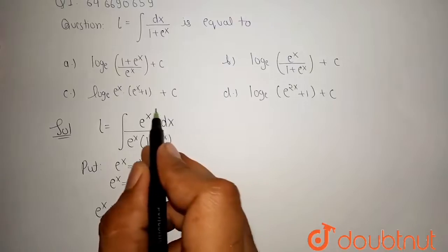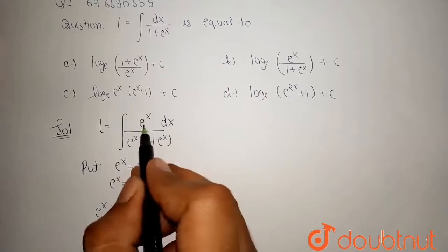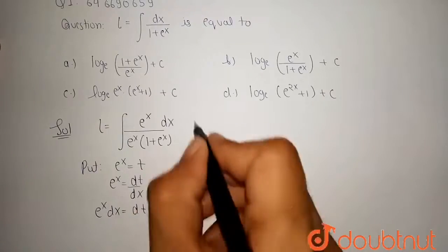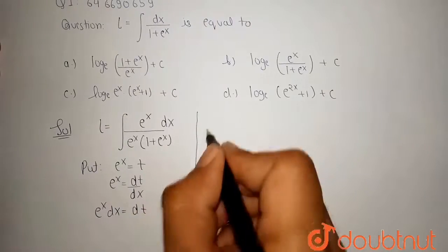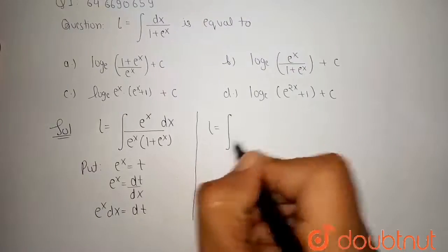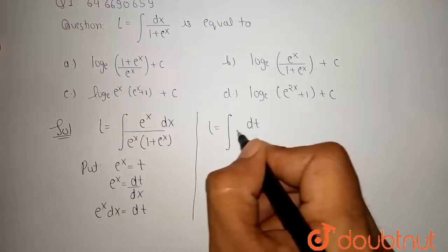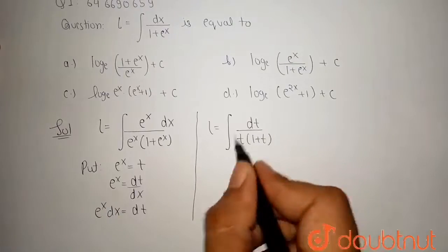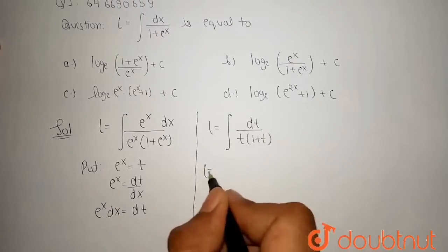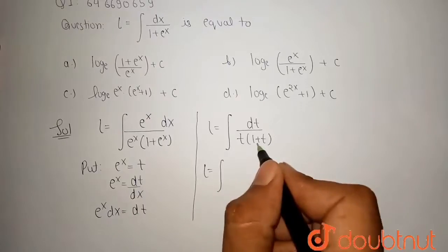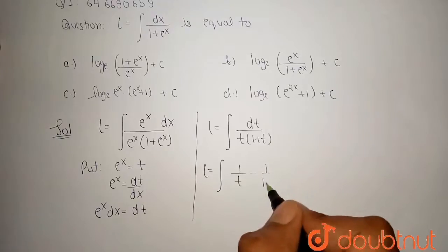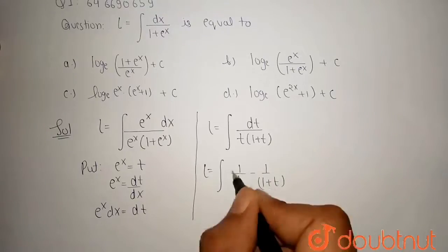I can replace this e to the power x into dx by this dt, and this e to the power x by t. So our integration becomes integral of dt upon t into 1 plus t. I can split this term. I can write this t into 1 plus t as 1 upon t minus 1 upon 1 plus t by the help of partial fractions.